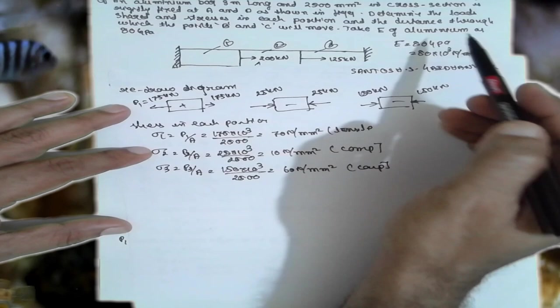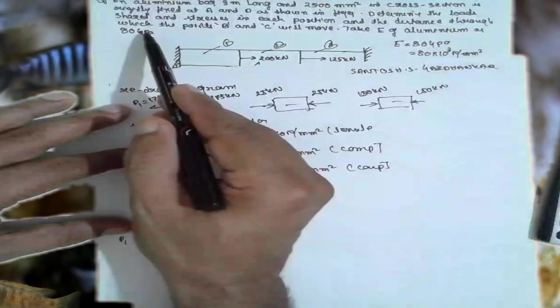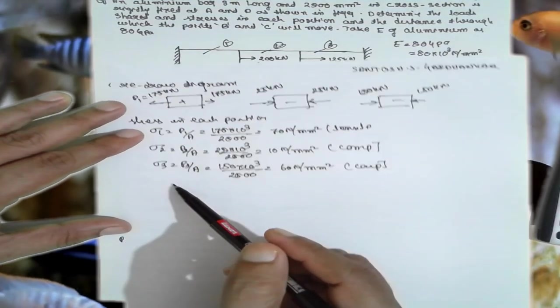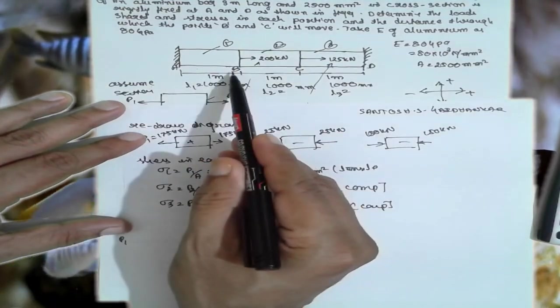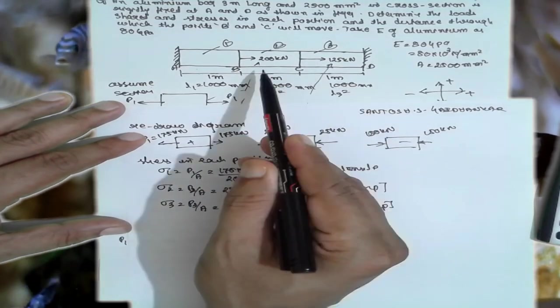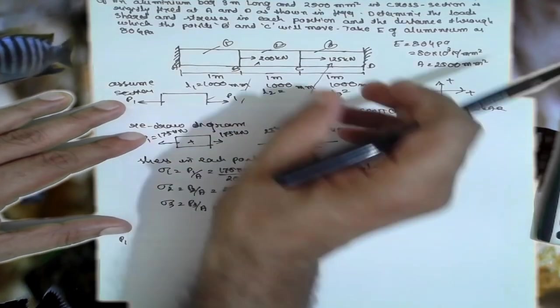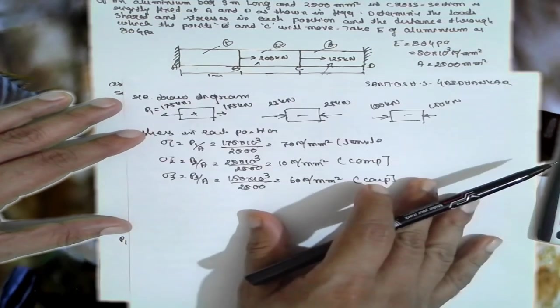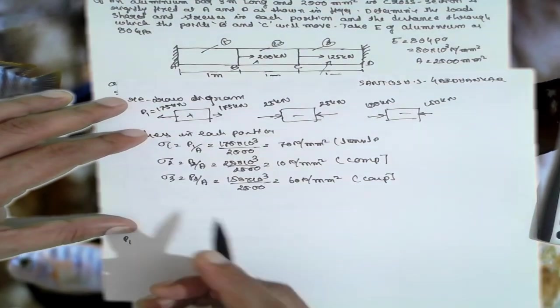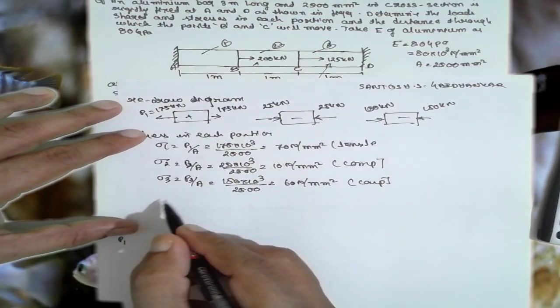Now, they have asked the distance through which the position B and C will move. B and C, B and C is nothing but this portion we have to consider. That means AB, how it moves, and CD, how it moves, we are going to find out. Or we can find out the total, each portion elongation, you can find out individually.